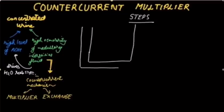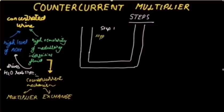Step 1 is a hypothetical step. It is assumed that step 1 occurs to build up this model of the counter current multiplier system. In step 1, there is flow of isoosmotic fluid from the proximal tubule into the loop of Henle. The fluid at the end of the proximal tubule is isoosmotic because in the proximal tubule, equal concentrations of solutes and water are reabsorbed.